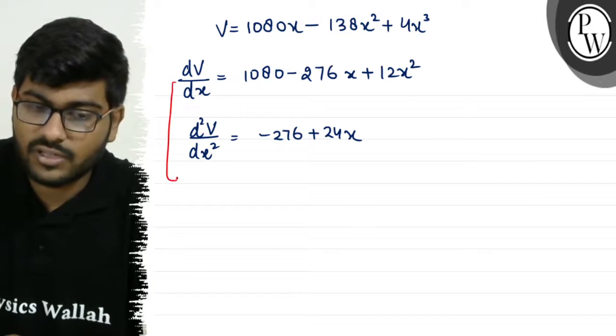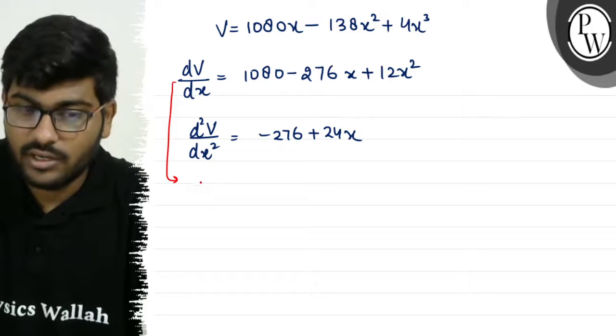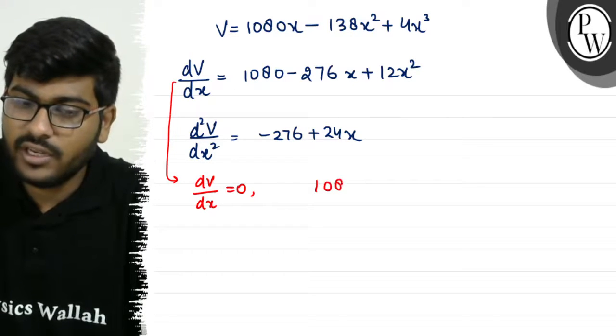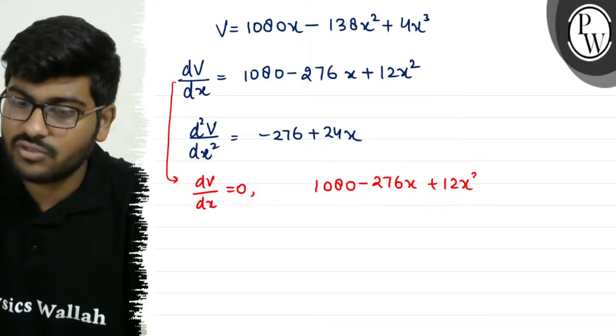So first, we have dV/dx equals 0 to check if x gives maximum or minimum. So dV/dx equals 0: 1080 minus 276x plus 12x² equals 0.